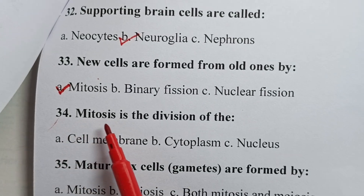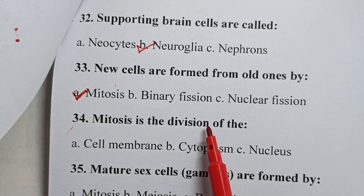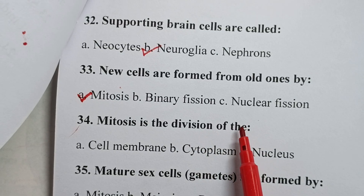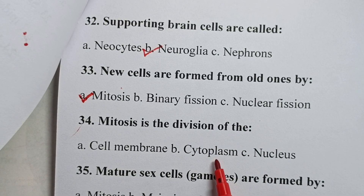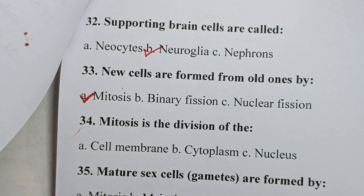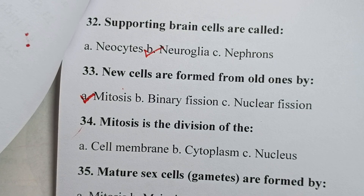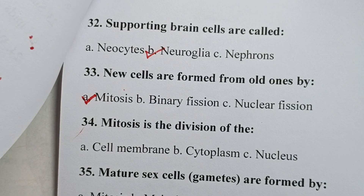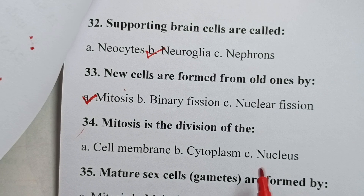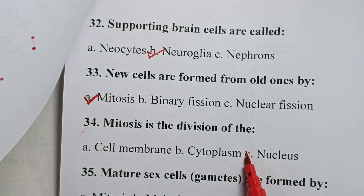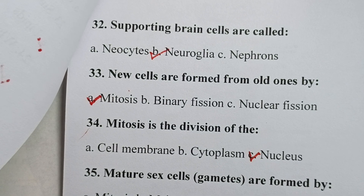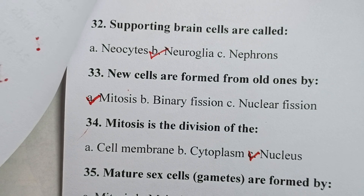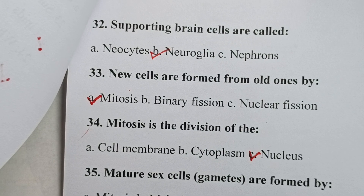Question thirty-four: mitosis is a division of the — is it cell membrane, cytoplasm, or nucleus? Your correct answer is nucleus. So, in mitosis, the nucleus of the cell divides, while in cytokinesis, the membrane of the cell divides.